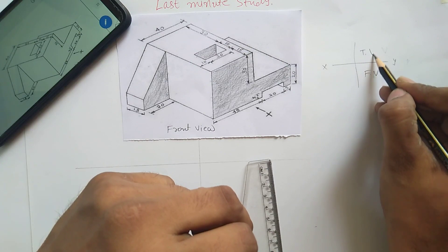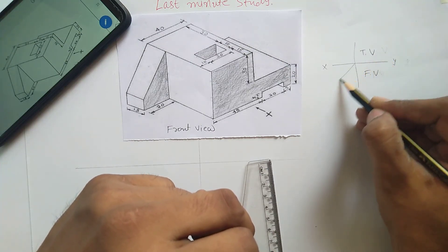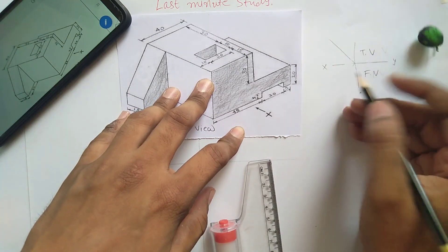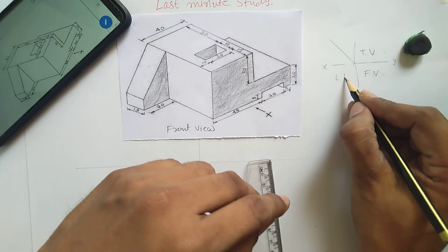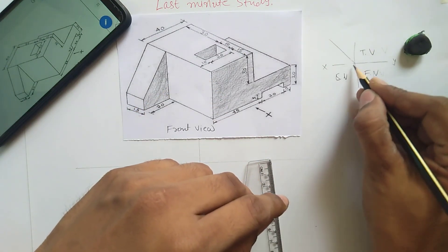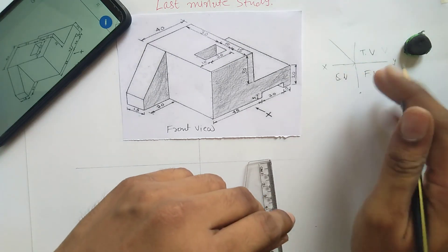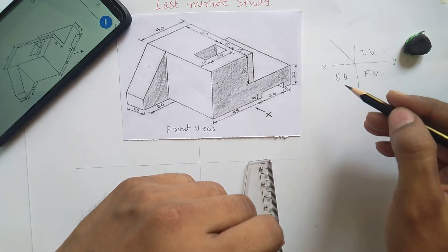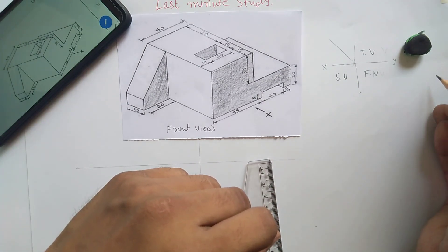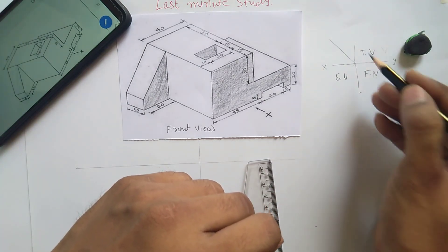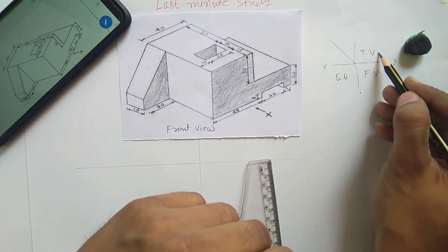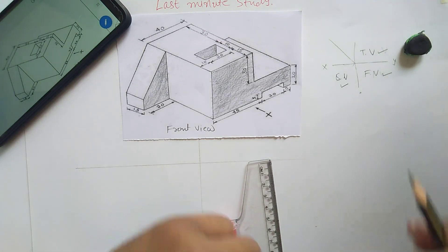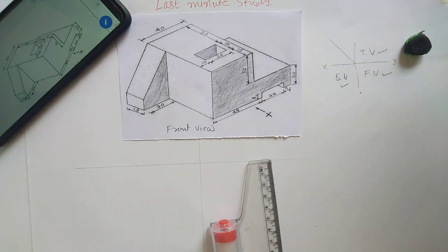The top view is above the XY line, and the side view is on the left-hand side. The view is drawn in the respective direction - if it is left-hand side view you have to draw it on the left-hand side, and if it is RHS view then you have to draw it on the right-hand side of the front view. In this case we are going to use top view, front view, and left-hand side view.